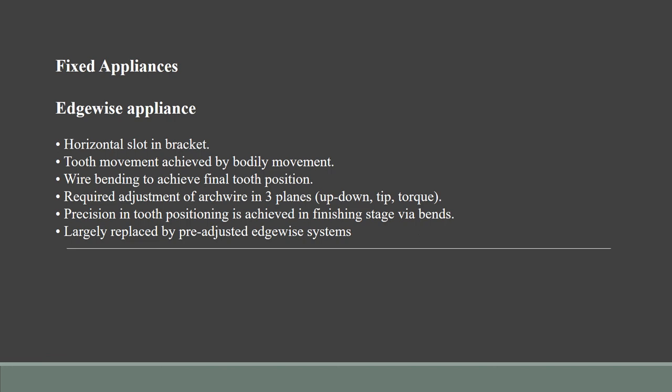The edgewise appliance had certain advantages: it could move the teeth in all three planes of space, had good control over tooth movement, and bodily movement of teeth was possible. However, for precision movement it needed certain finishing bends — a disadvantage. There was also a need to apply heavy forces and complex wire bending to move teeth into their final positions.